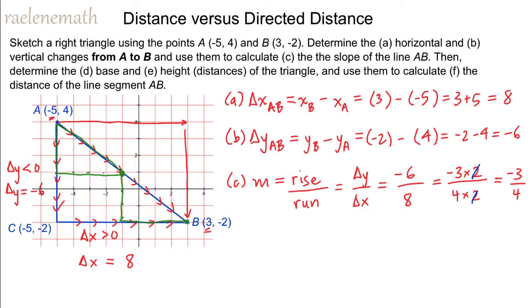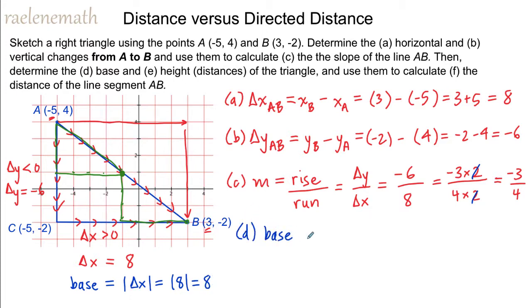The next part of the question asks us to determine the distances for the base and the height. The base is nothing more than the absolute value of the change in x, and the absolute value of 8 is just 8. We don't need to change the sign of positive 8 in order to get distance. So part D asks for the base, which is 8. Furthermore, in part E, we want the height of the triangle, and the height is the absolute value of delta y, which is the absolute value of negative 6, which is equal to 6.